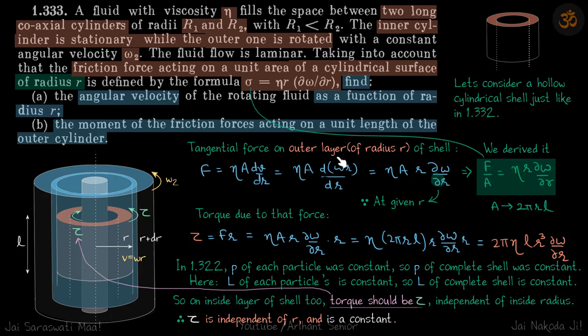So tangential force on outside layer of radius r of shell is given by eta a dv by dr. So velocity at a distance r is omega r. So we write this as eta a d omega r by dr. But because we are talking about this outside layer of radius r, so r is a constant. So we take r outside. So this becomes eta a r d omega by dr.